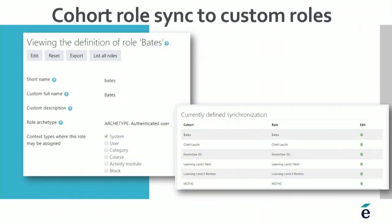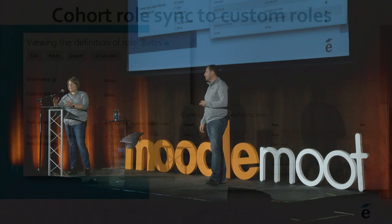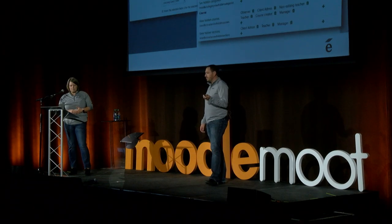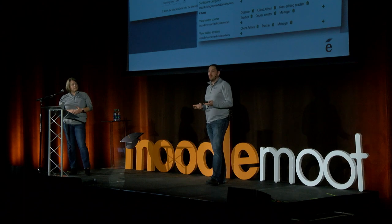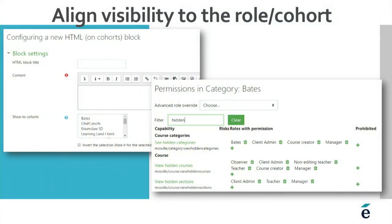Next is cohort role sync to custom roles — setting up that custom role and then defining the synchronization so that the established cohort pushes into that custom role. In this case it's essentially a glorified authenticated user, because it's then pushing them in as a learner to the courses where they need access. Importantly, we're not excluding cohorts from their primary use case of enrollment — but you can also use other enrollment methods like external DB enrollment alongside this.